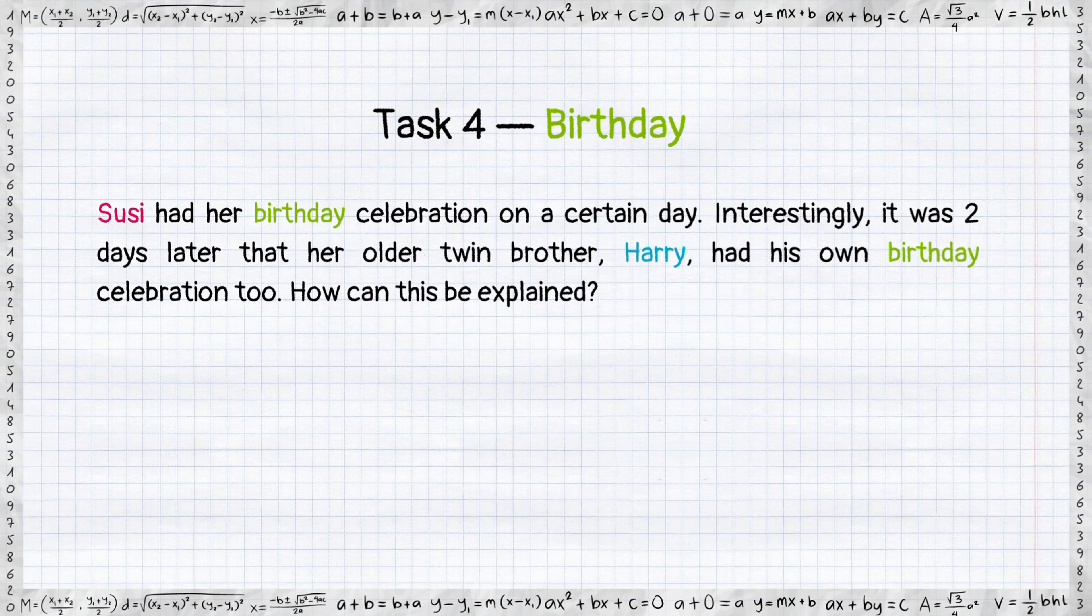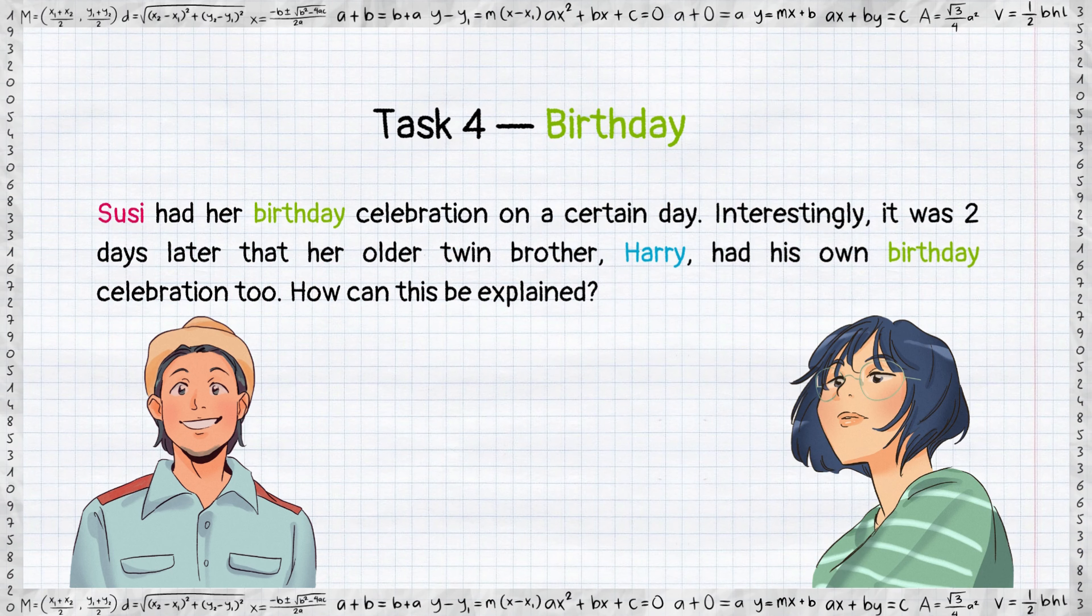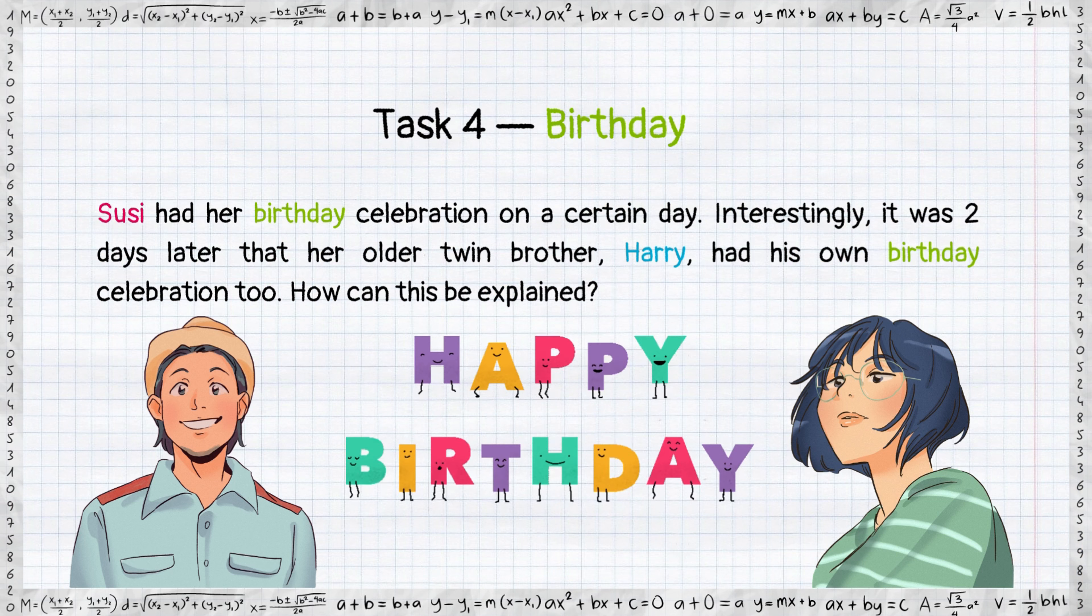Susie had a birthday celebration on a certain day. Interestingly, it was two days later that her older twin brother Harry had his own birthday celebration too. How can this be explained?